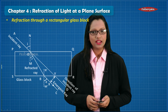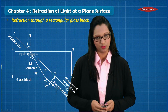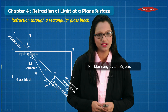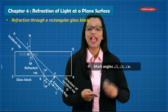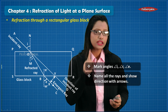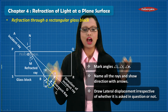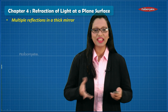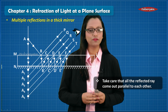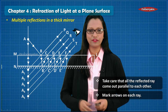The next commonly asked question is refraction of light through a rectangular glass block. Label all the rays and check that you haven't missed any of the three angles: angle of incidence, angle of refraction, and angle of emergence. All rays should have labels along with direction. Very importantly, do not forget to mark the lateral displacement — irrespective of whether it is asked in the question or not. For the last diagram in Part A — multiple reflection in a thick mirror — ensure the reflected rays come out parallel to each other, and don't forget the arrows on all rays.